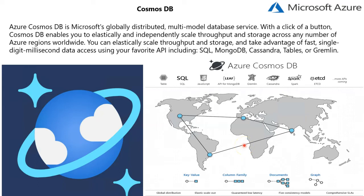Azure Cosmos Database provides native support for NoSQL and OSS APIs, including MongoDB, Gremlin, Spark, and SQL, among others. It also offers multiple well-defined consistency models, guaranteed single-digit millisecond read or write latency at the 99th percentile, and guaranteed 99.999% high availability with multi-home support anywhere in the world, all backed by industry-leading comprehensive SLAs.